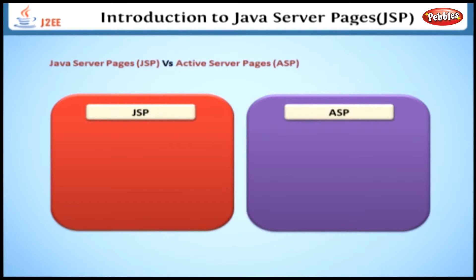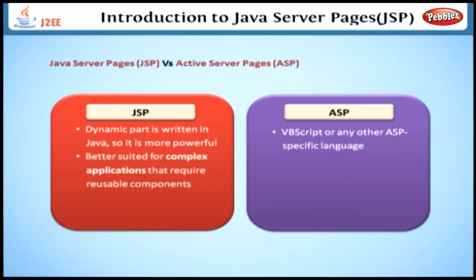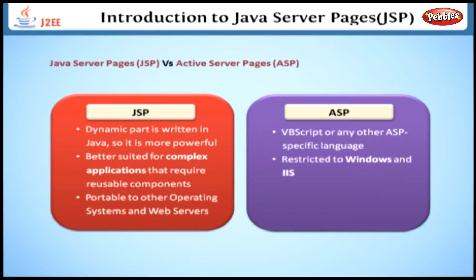Java Server Pages versus Active Server Pages. ASP is a competing technology from Microsoft. The advantages of JSP over ASP are: first, the dynamic part is written in Java, not VBScript or another ASP-specific language, so JSP is more powerful and better suited for complex applications that require reusable components. Second, JSP is portable to other operating systems and web servers — we aren't restricted to Windows and IIS.